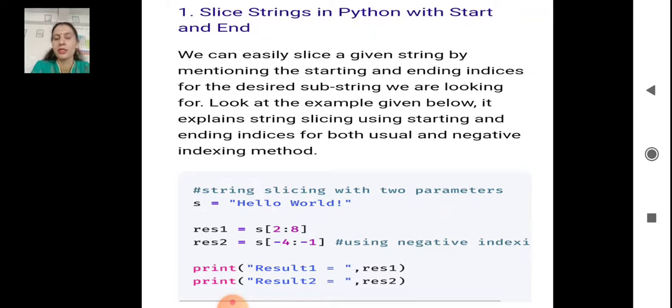Res1 is the substring name equals to s[2:8], where s is the string you are slicing. Here 2 is the start value from where you want to do the slicing and 8 is the stop value.